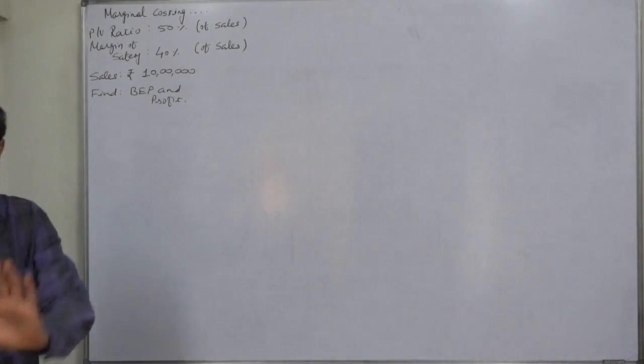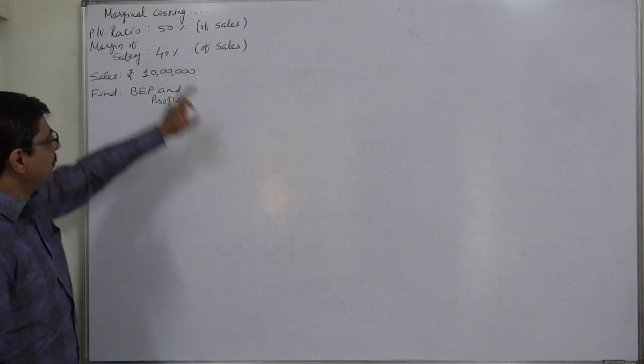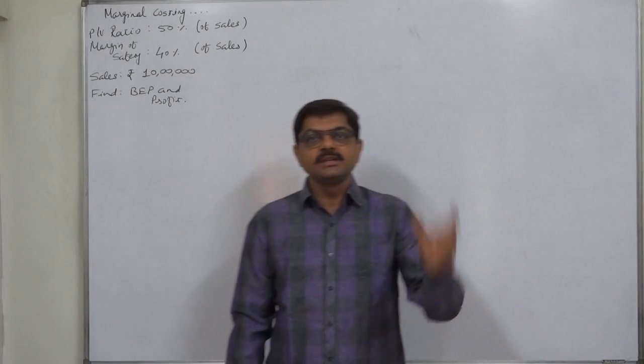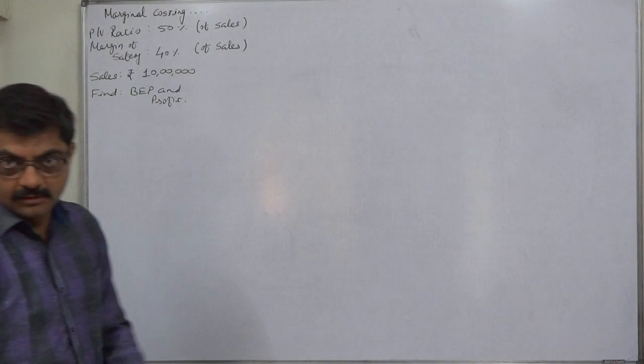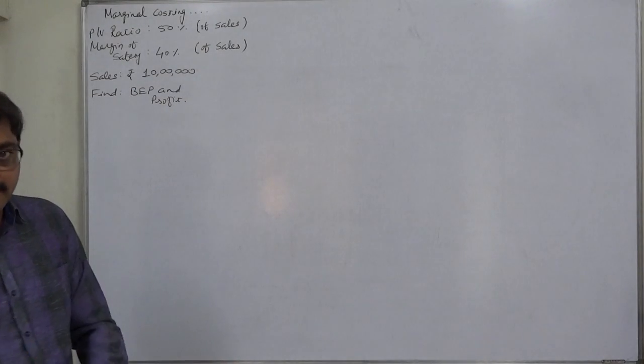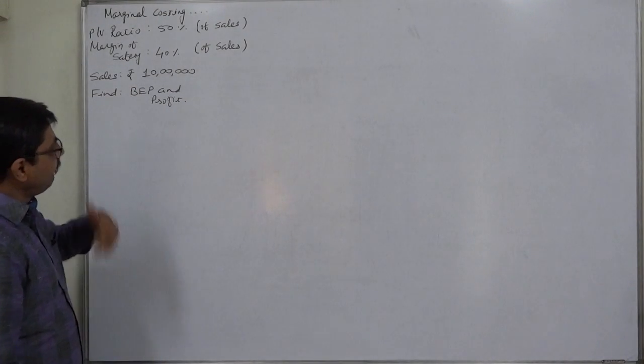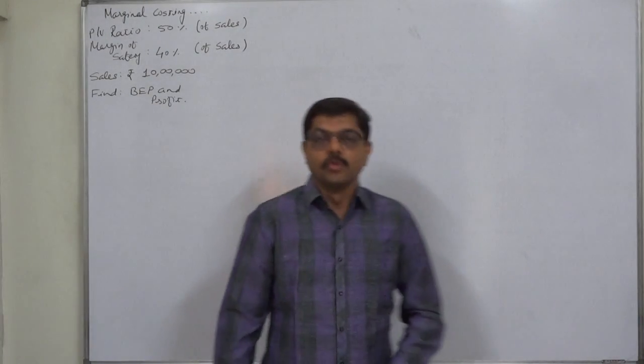This is the interpretation of PV ratio 50%. Similarly, margin of safety 40% means margin of safety at present is 40% of sales. This is the interpretation and if we know this interpretation, this kind of problems can be solved.